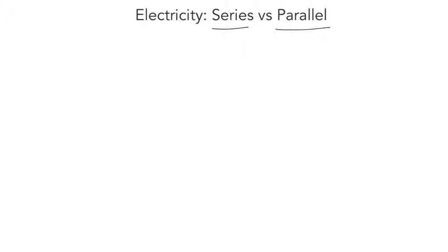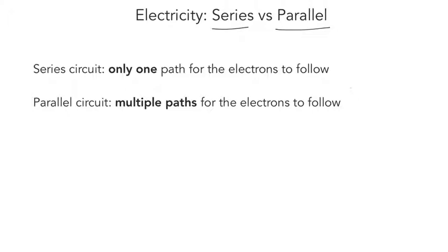When we're talking about series circuits and parallel circuits, we're really talking about the path that the electron takes throughout the circuit. In a series circuit there's only one path for the electrons to follow and all electrons must take this path, whereas in a parallel circuit there are multiple paths for the electrons to follow, meaning the electrons have a choice of which path they're going to take.